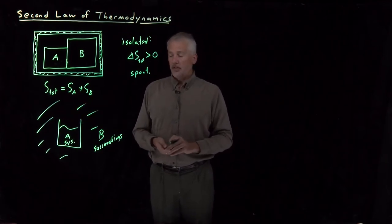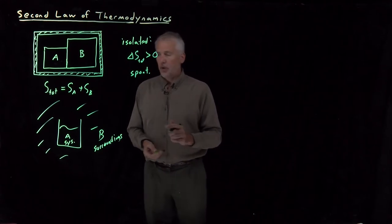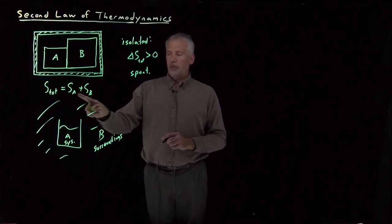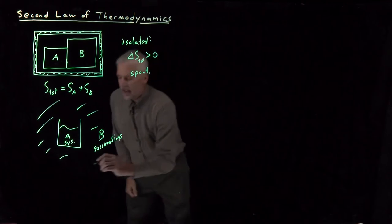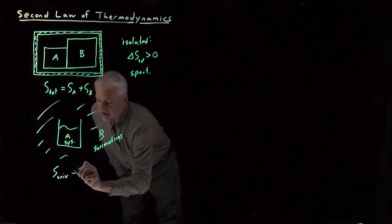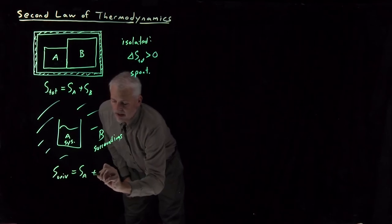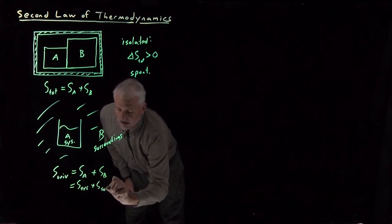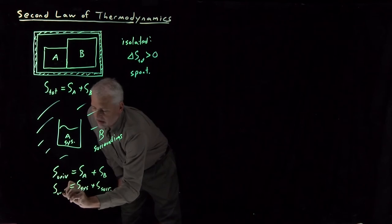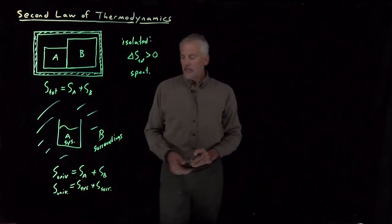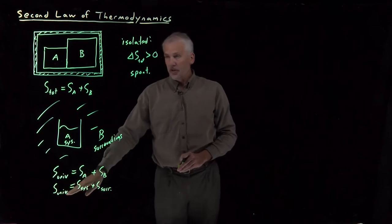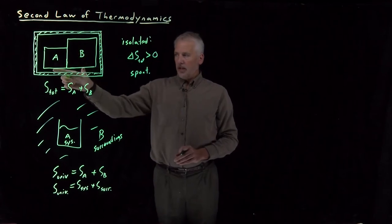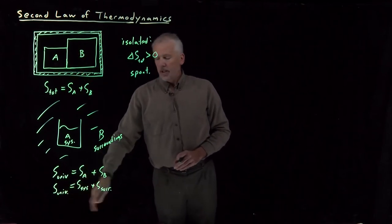So the universe itself is thermally insulated from everything else. Where in the previous example we had the total entropy being the entropy of system A and the entropy of system B, here we can say the entropy of the entire universe is equal to the entropy of A, or the system, and the entropy of B, or the surroundings. System and surroundings together combine to make up the entire universe. The key observation is that the universe itself is an isolated system — it's thermally isolated. So everything we could say only about an isolated system, we can now say about the universe as a whole.